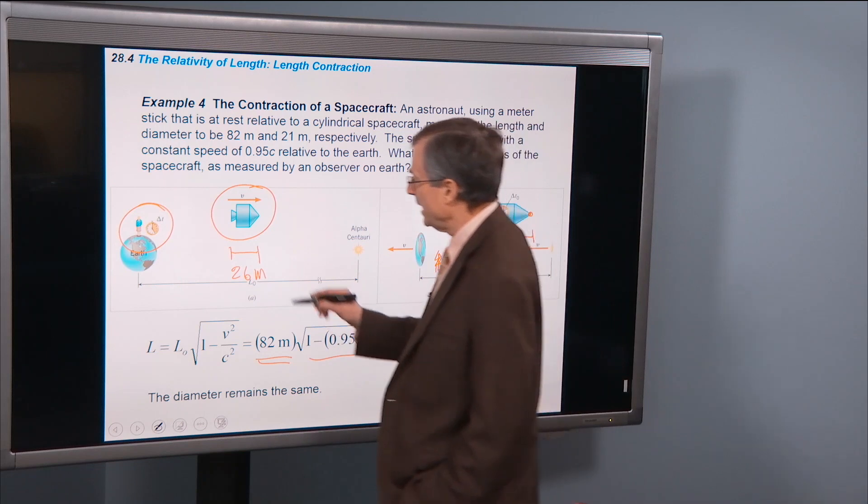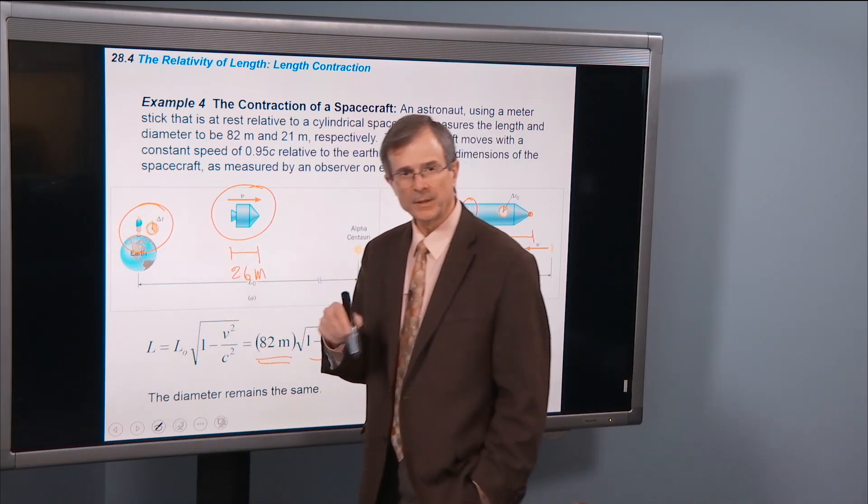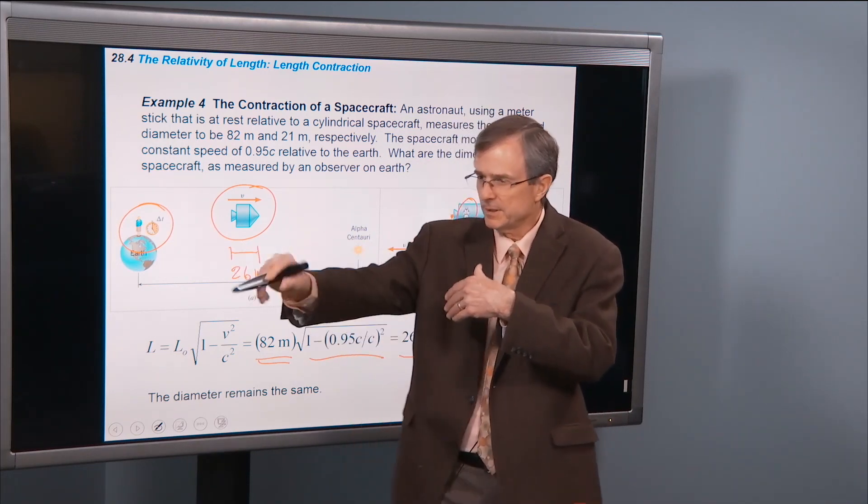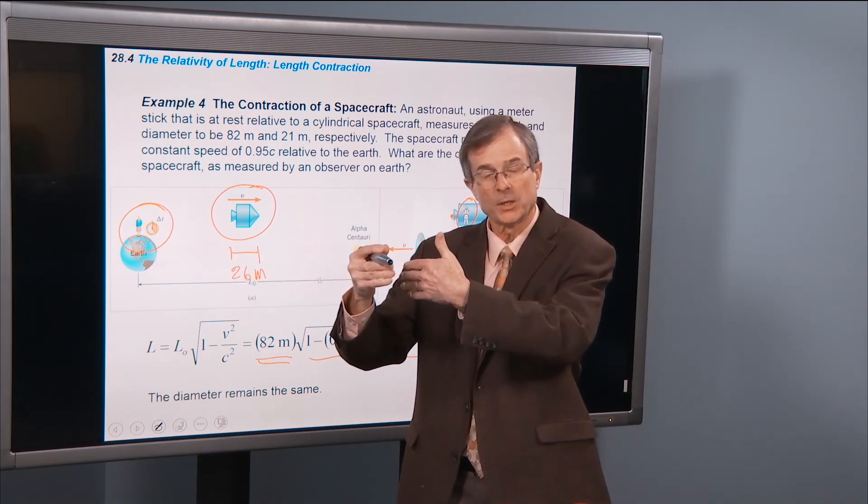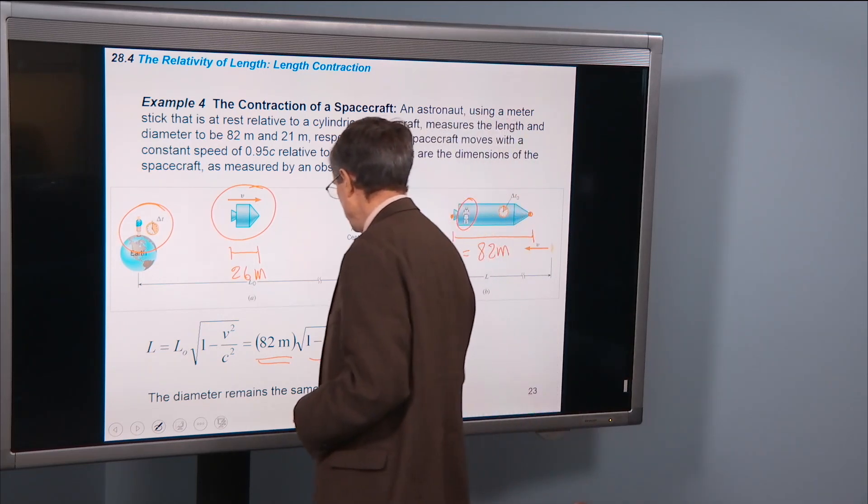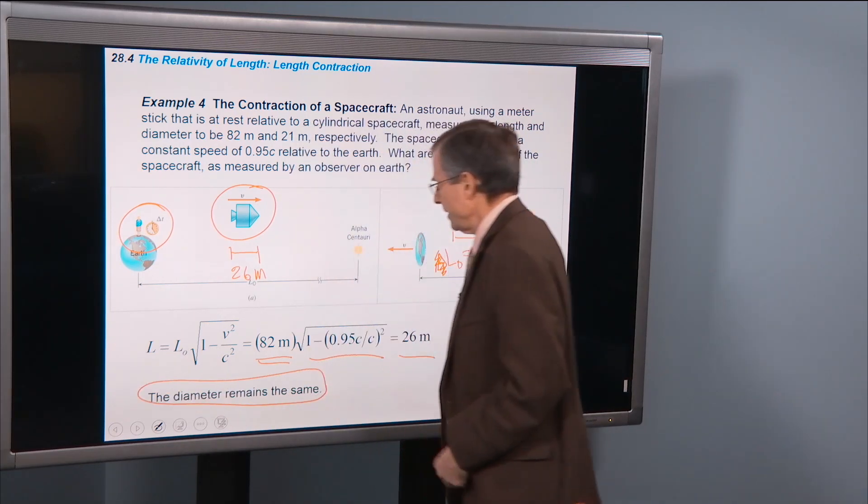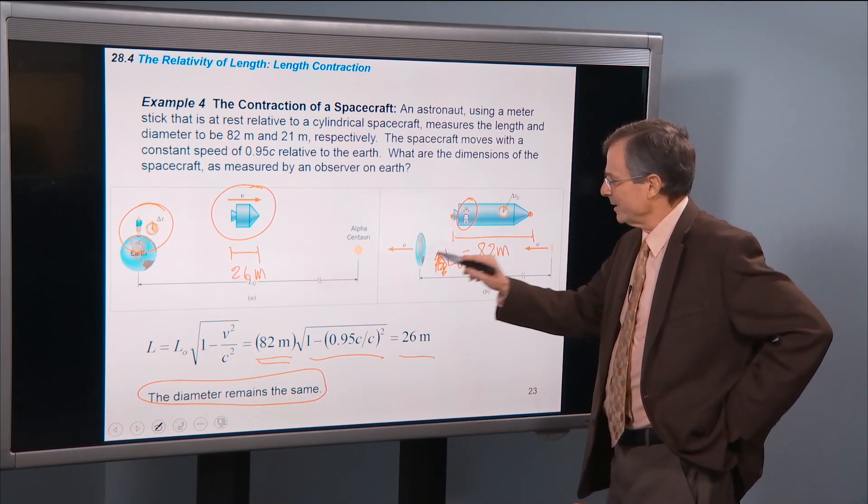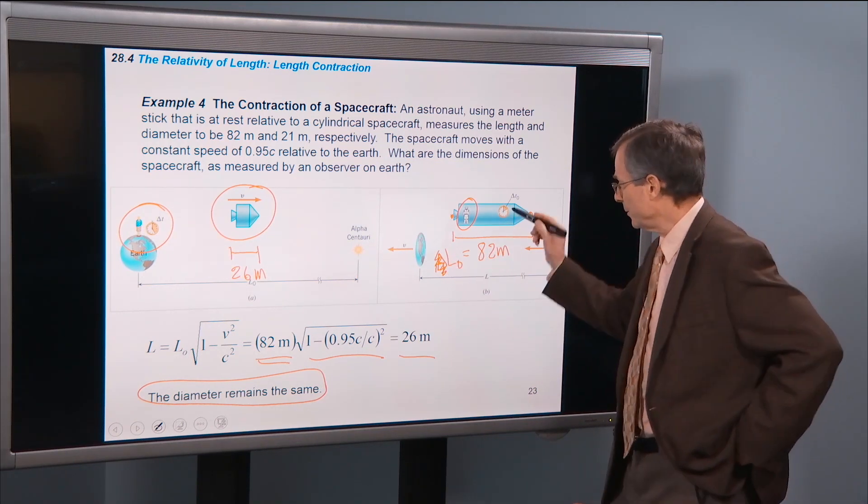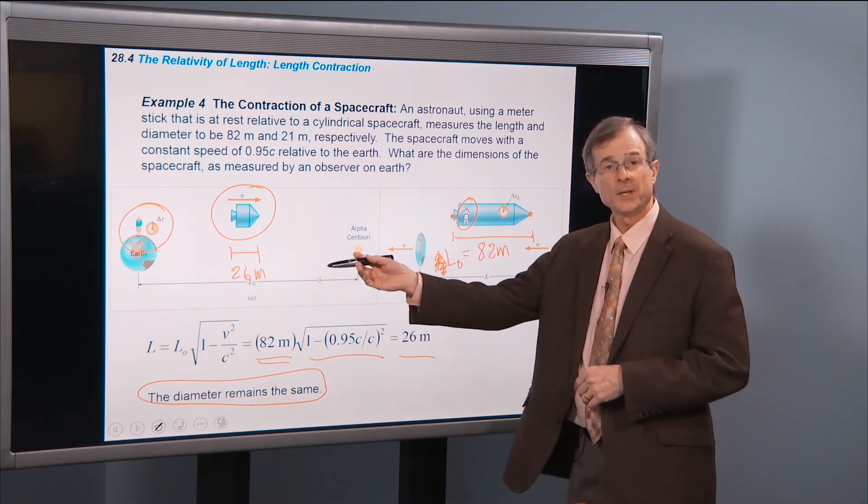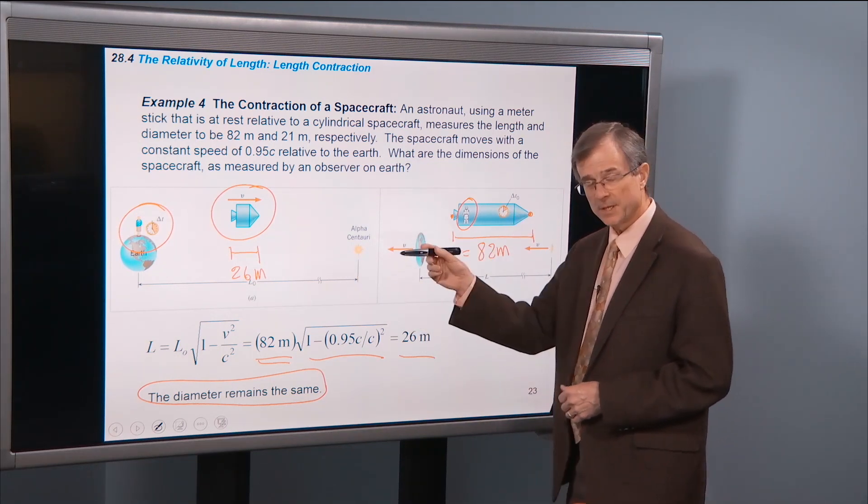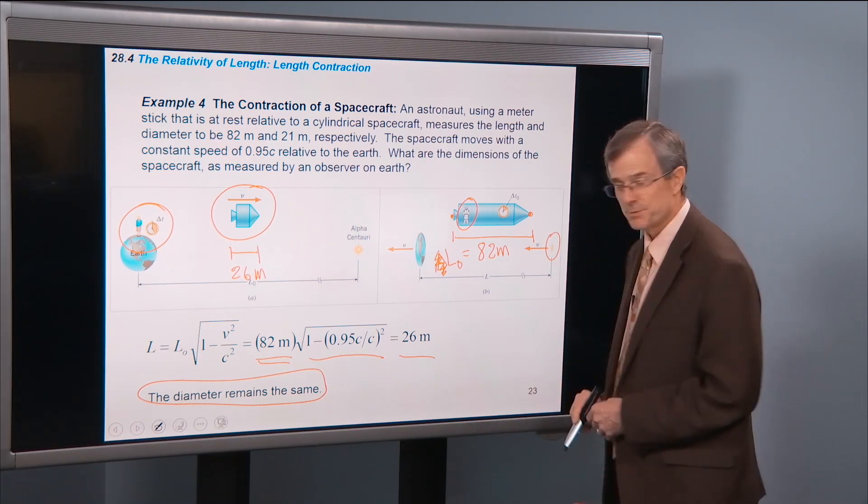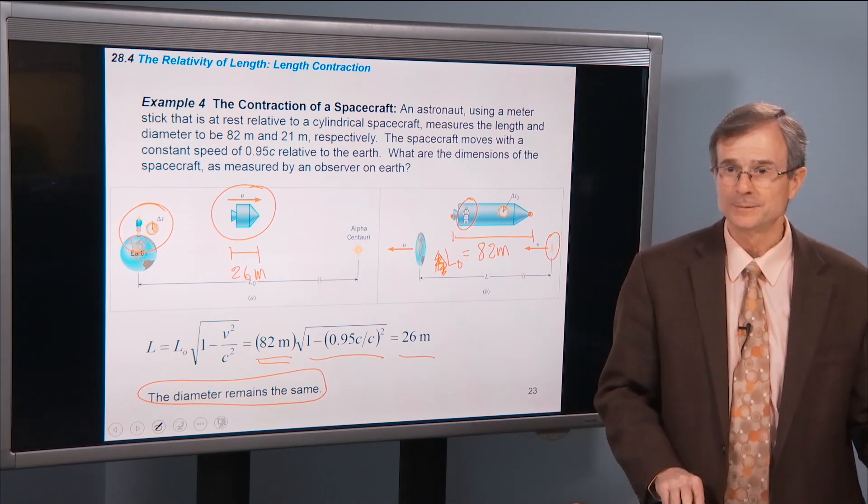The diameter remains the same. So the only thing that length contraction does is it contracts the length in the direction of travel. If you're traveling this way, it's going to contract those lengths in that particular direction. But the diameter doesn't change. Now, the interesting thing, from the perspective of the astronaut, the Earth gets squashed. Because from his perspective, he says, hey, I'm stationary. Earth's moving the other direction. Therefore, the Earth is getting squashed in the direction of motion. And also, the star up ahead gets squashed side, front to back.